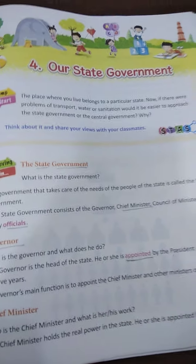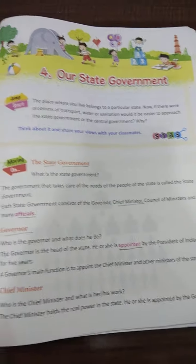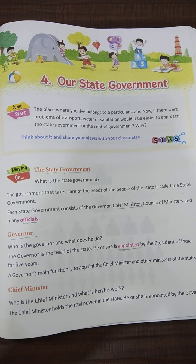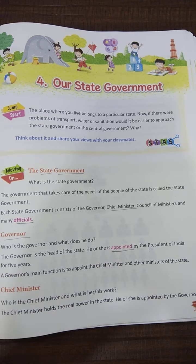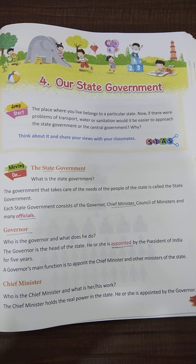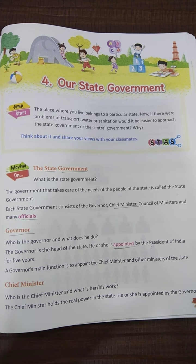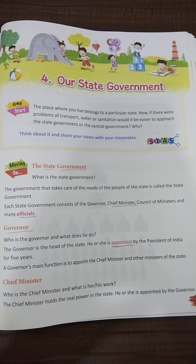That is all about the last lesson number 3. Now here we are learning about the state government. The state government is a government who takes care of the people of the state. Each state government consists of governor, chief minister, council of ministers and many officials.